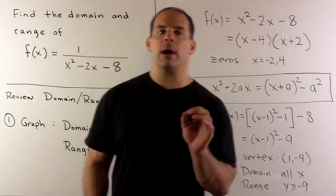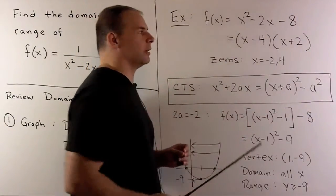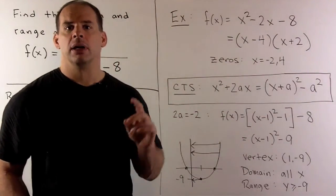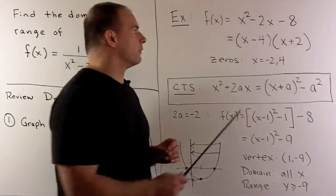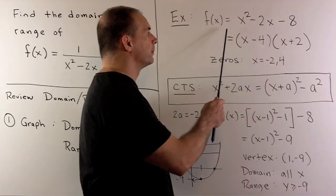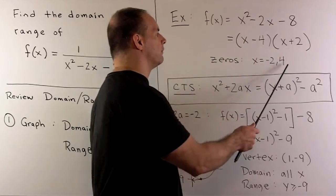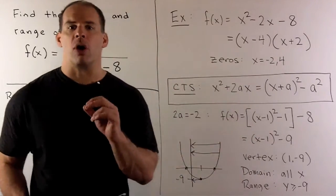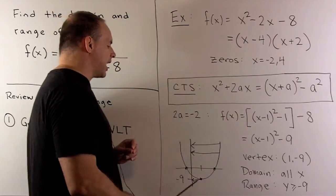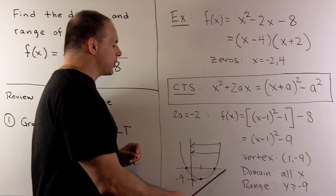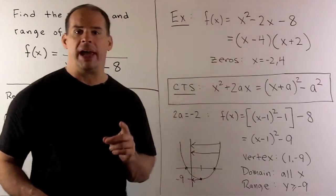For a warm-up, let's apply our two tests to f(x) = x² - 2x - 8. This function has an upward-facing parabola since the coefficient of x² is positive. If we factor, we find that the x-intercepts are going to be at -2 and 4. For a rough graph, our picture looks like this. Applying the vertical line test, we see that for any x on the x-axis, the vertical line cuts the graph at some point, so our domain is going to be all x.